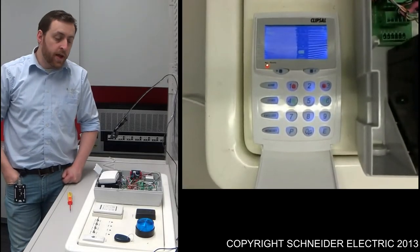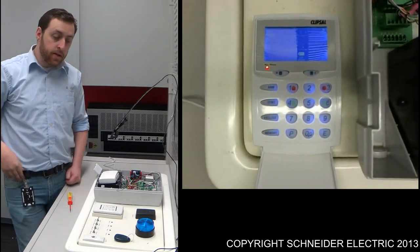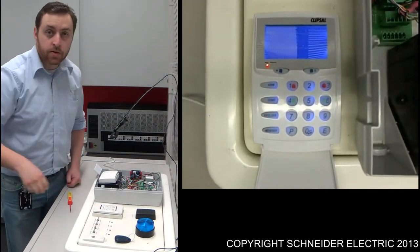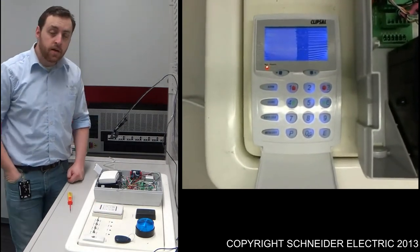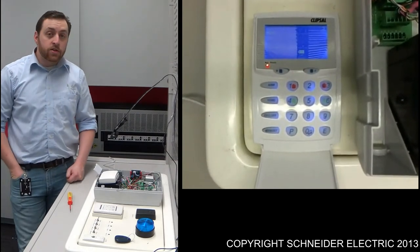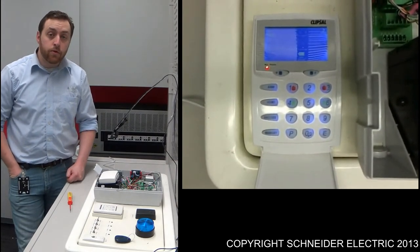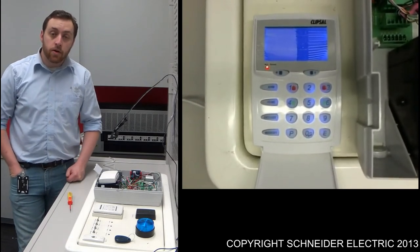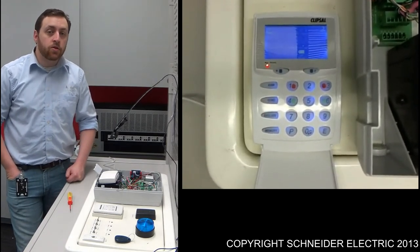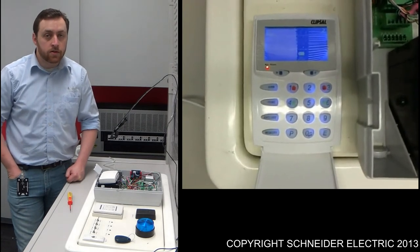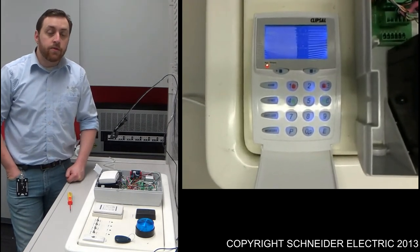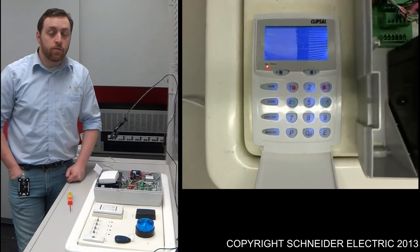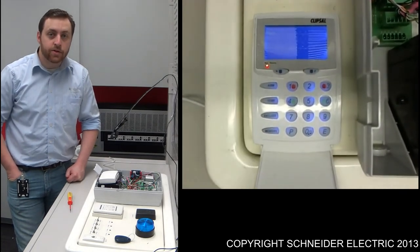This concludes how to go about programming key pendants within your HomeSafe Security System. For more information on how to do this, just refer to the installation instruction for the HomeSafe Security System. It's all in there. If you'd like to speak to somebody about it, just contact the Partner Business Technical Support Team. If you need their number, just contact one of your local Clipsal representatives. Thank you for watching.